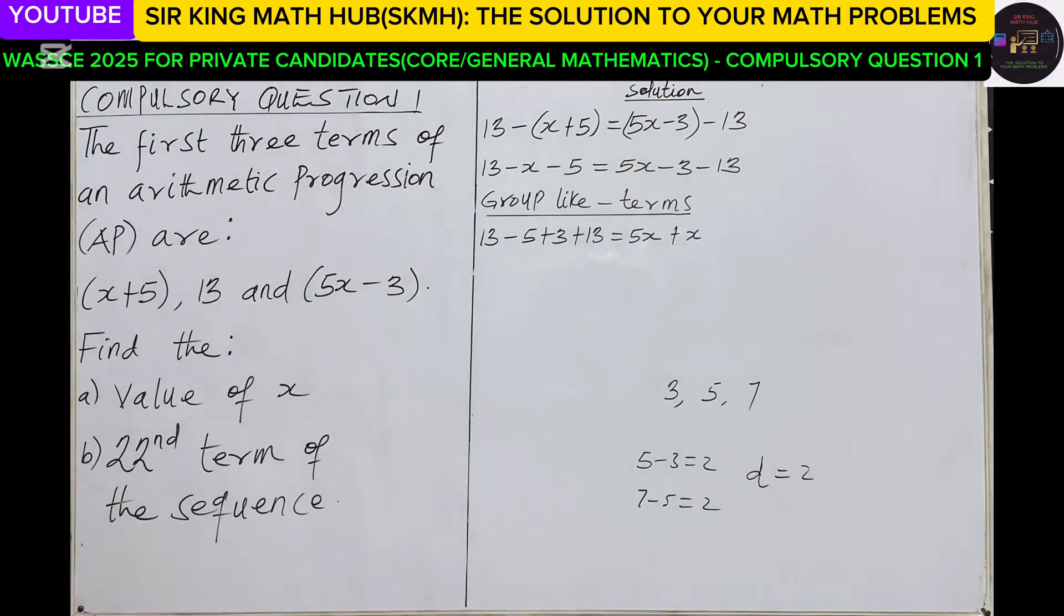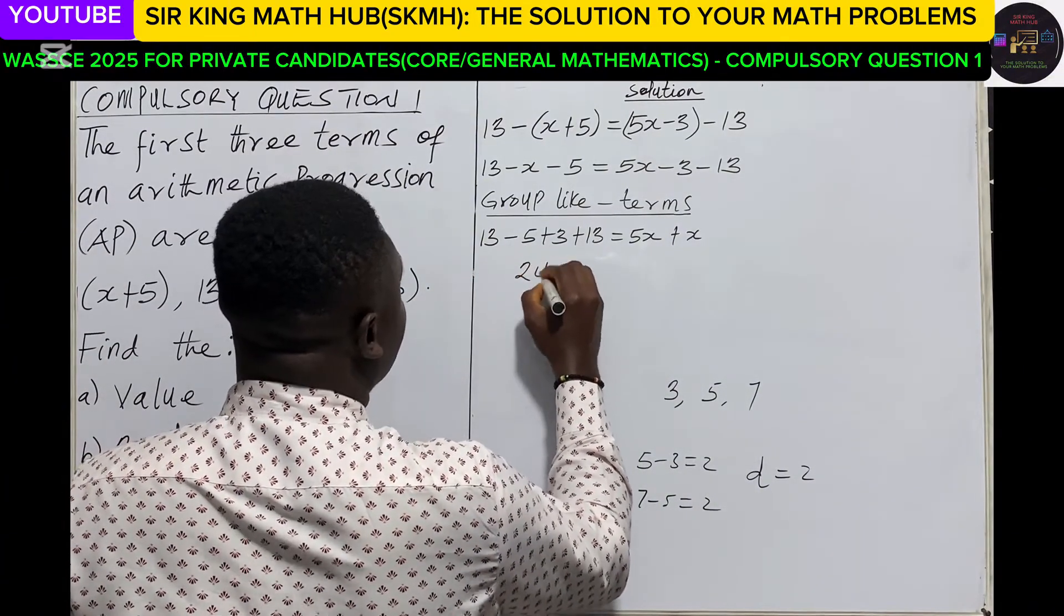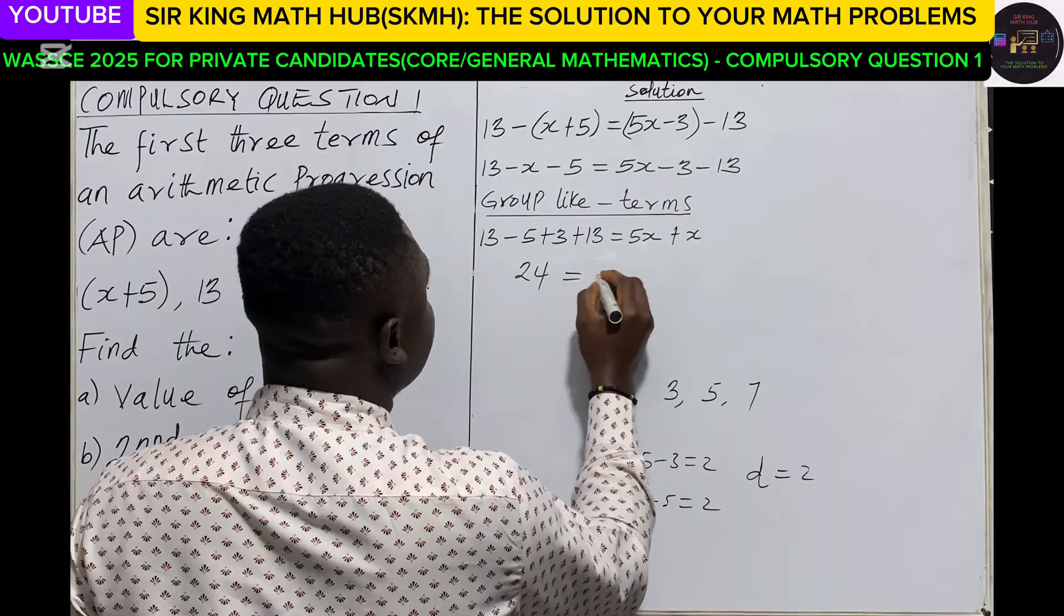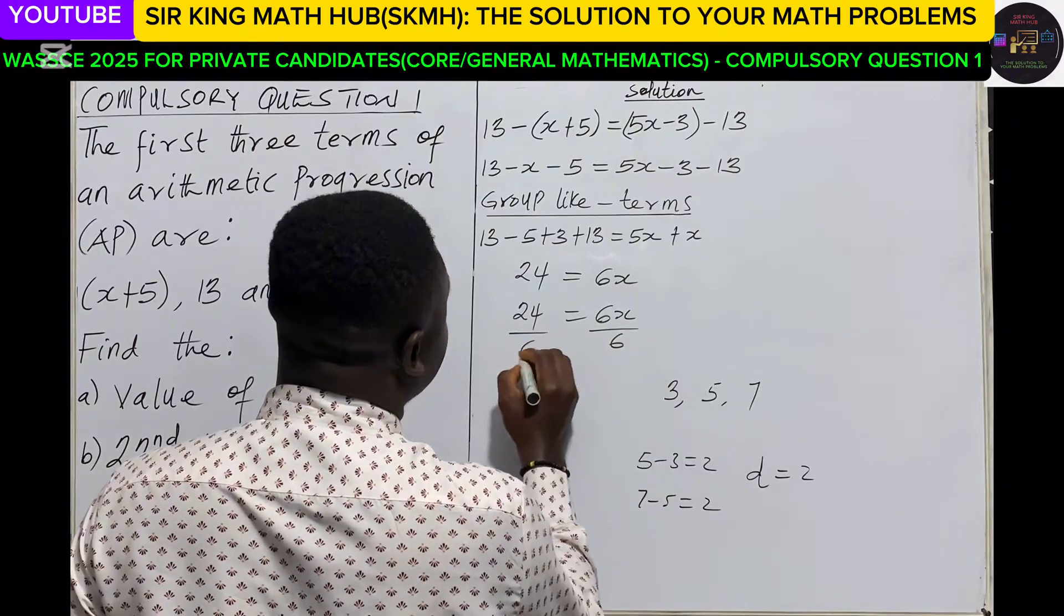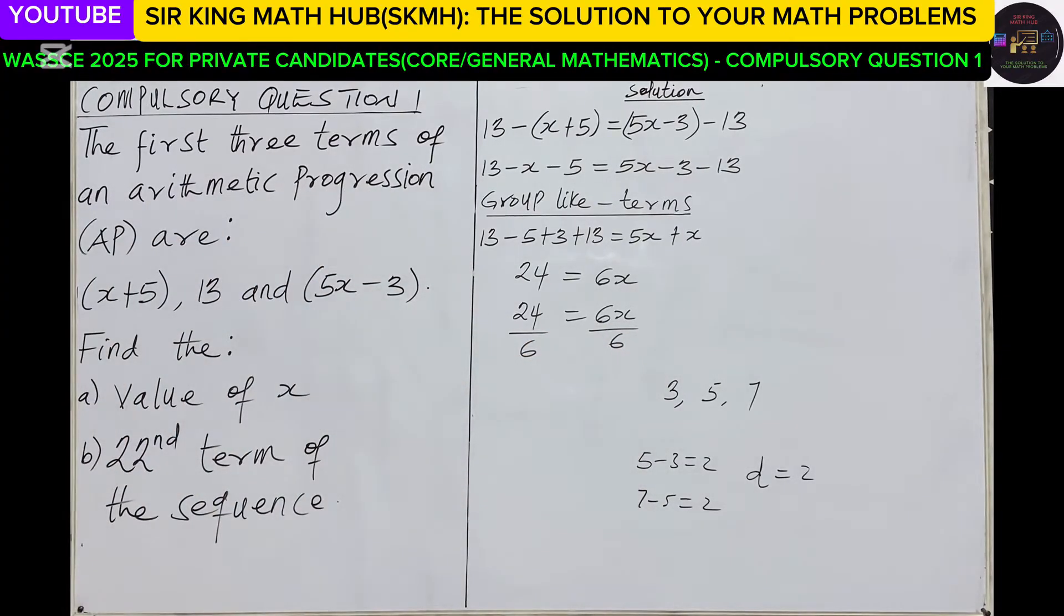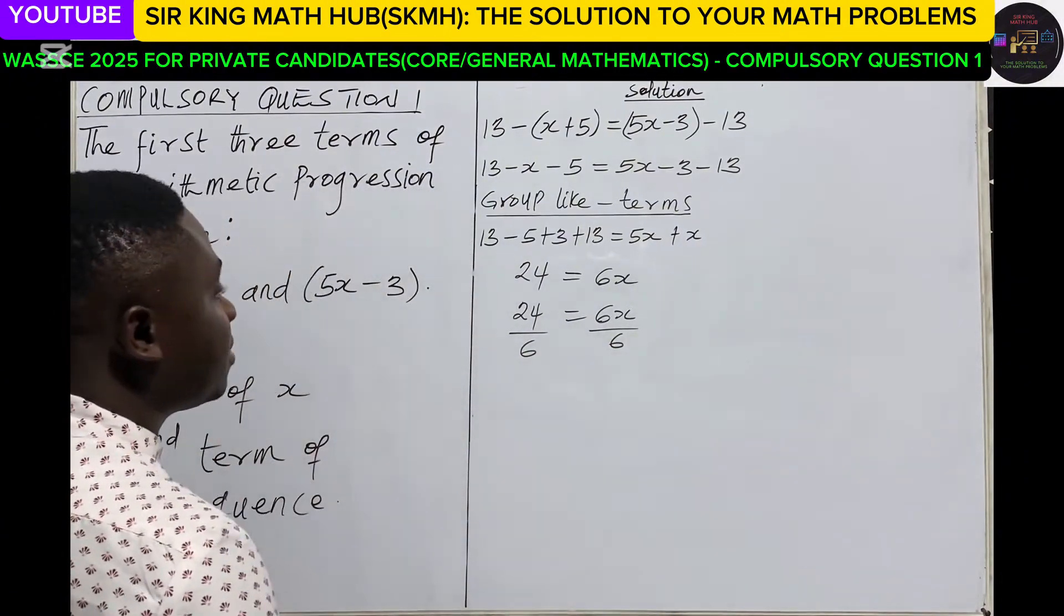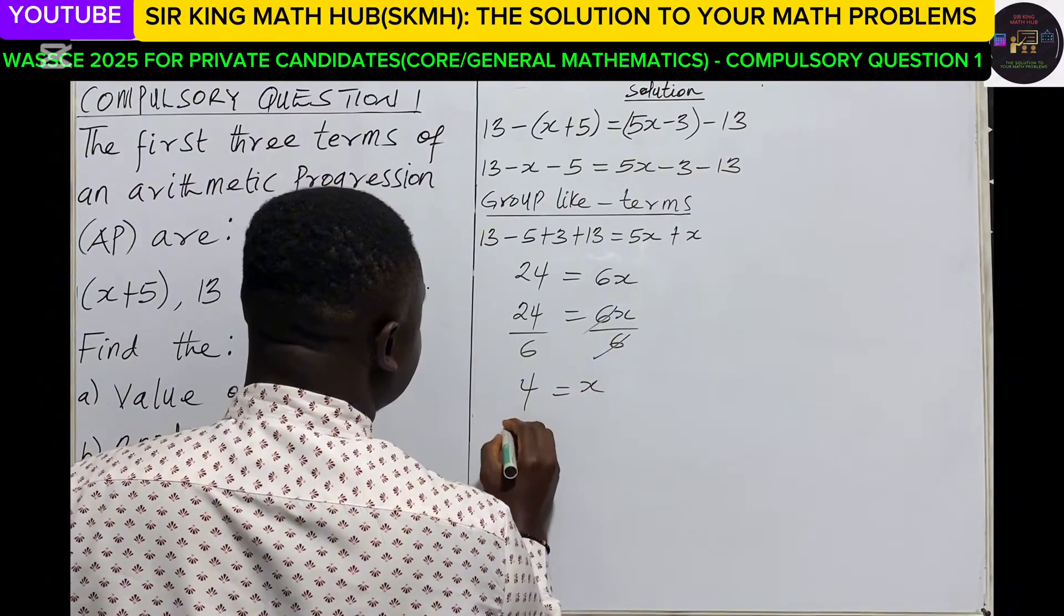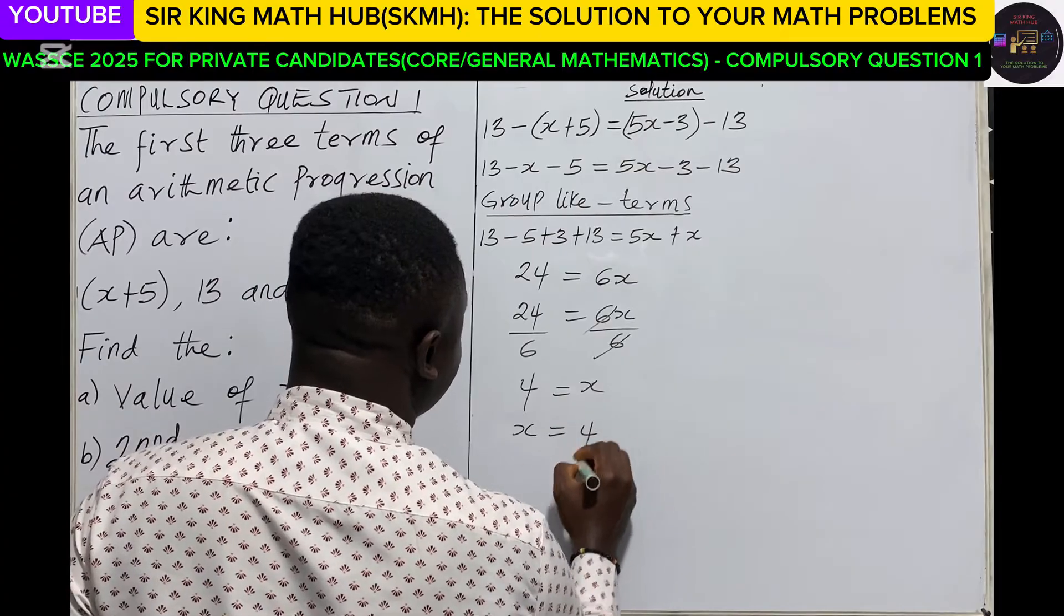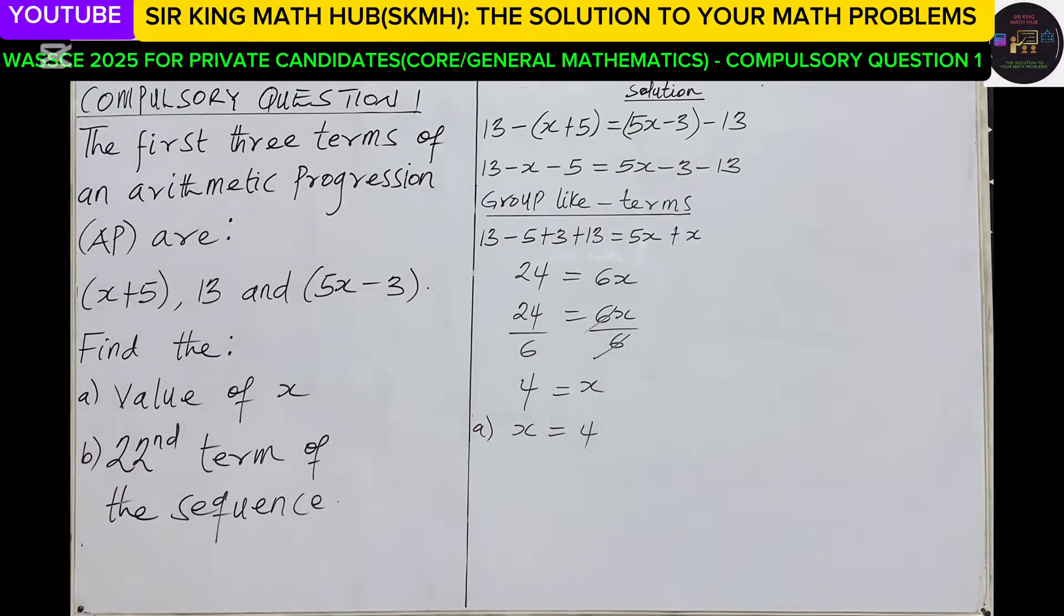We can simplify: 13 minus 5 plus 3 plus 13, so I'm having 24, and this must be equal to 6x. Since we are looking for x, we divide both sides by 6. 24 divided by 6, the 6 will cancel out, that is 4. So we can say that x is equal to 4.